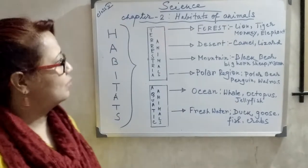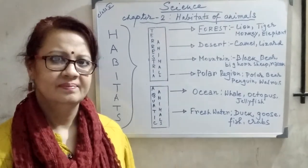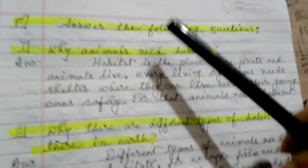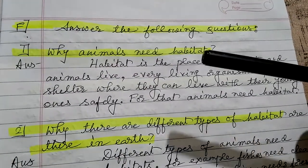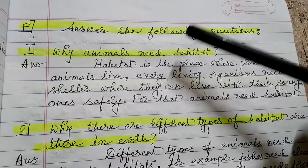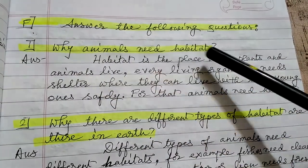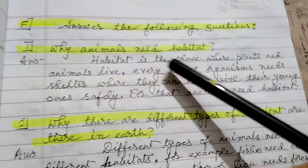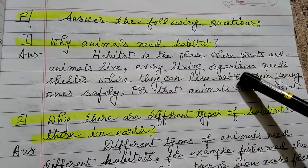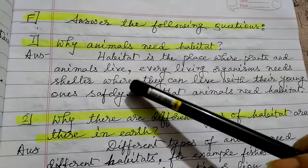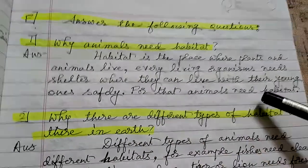This was the concept map about our total chapter. Now let's go to the question answers. Objective type questions were already discussed in our previous class. Today, question number one: why do animals need a habitat? Habitat is the place where plants and animals live. Every living organism needs shelter where they can live with their young ones safely. For that reason, animals need a habitat.